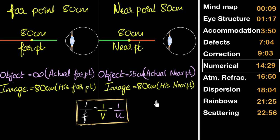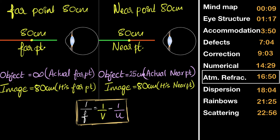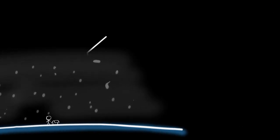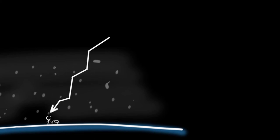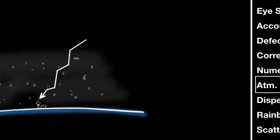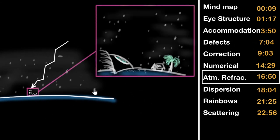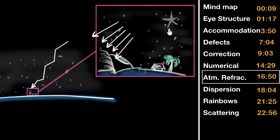This wraps up the human eye; we now go to the colorful world, starting with atmospheric refraction. The first consequence is the twinkling of stars. Light from a star bends multiple times in our atmosphere before reaching our eyes. Because atmospheric conditions are continuously changing, the path taken keeps changing slightly with time, so the amount of light entering our eyes varies, causing the star's brightness to change — making it appear to twinkle.